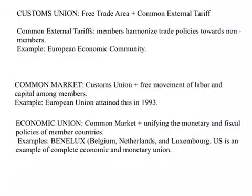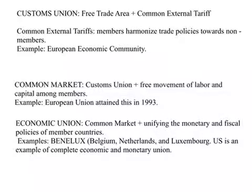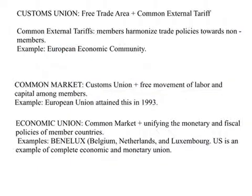Whatever problems arise under a free trade area are eliminated under what is called a customs union. A customs union is a free trade area — all trade barriers among members are removed — and at the same time member nations set up a common external tariff. If Mexico, the US, and Canada have the same set of tariffs with non-member countries, trade diversion through third countries is eliminated. Members harmonize their trade policies towards non-members. NAFTA and the earlier European Economic Community, a precursor to the European Union, are examples of a customs union.